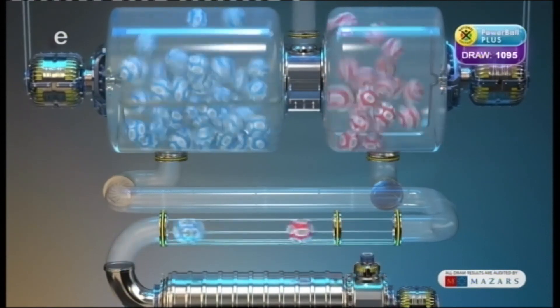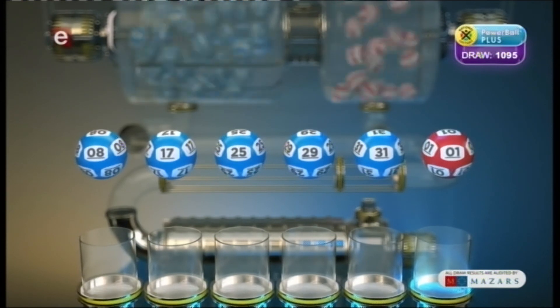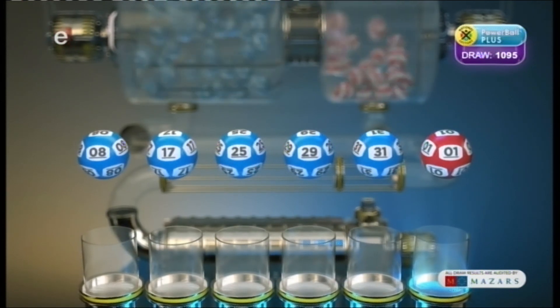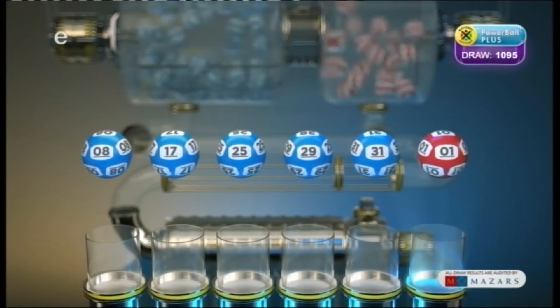Let's recap these numbers in numerical order. 8, 17, 25, 29, 31. And the Powerball is 1.